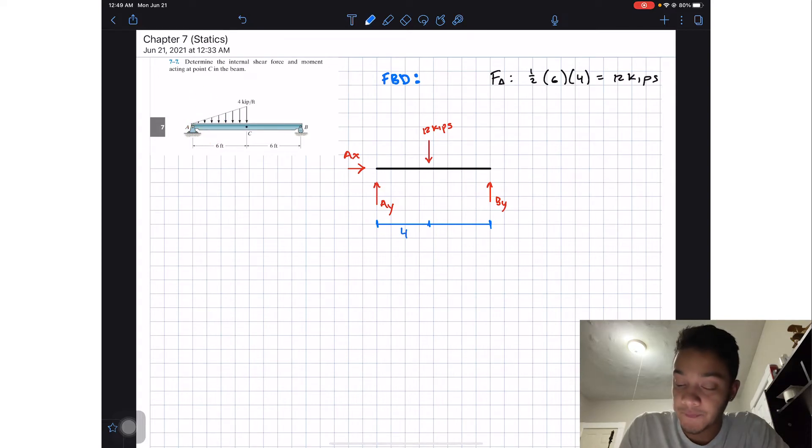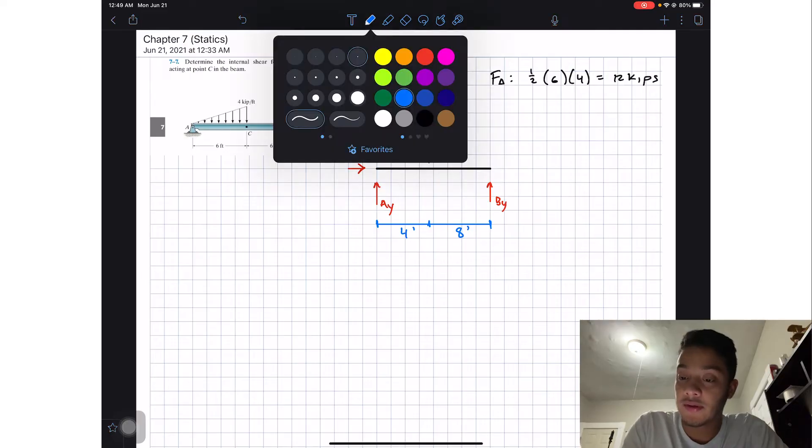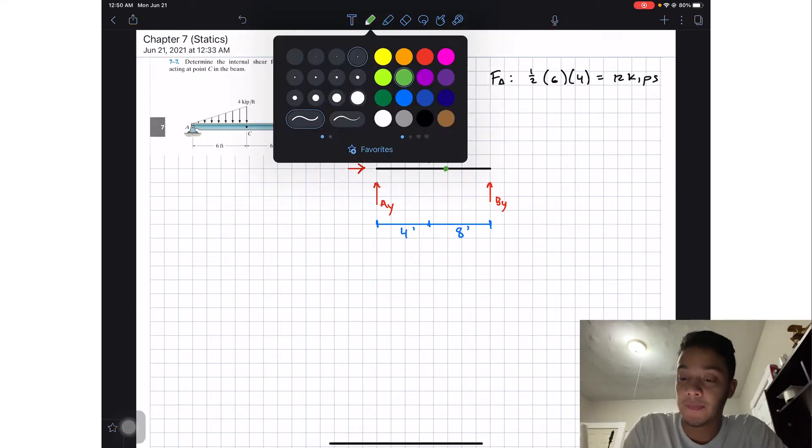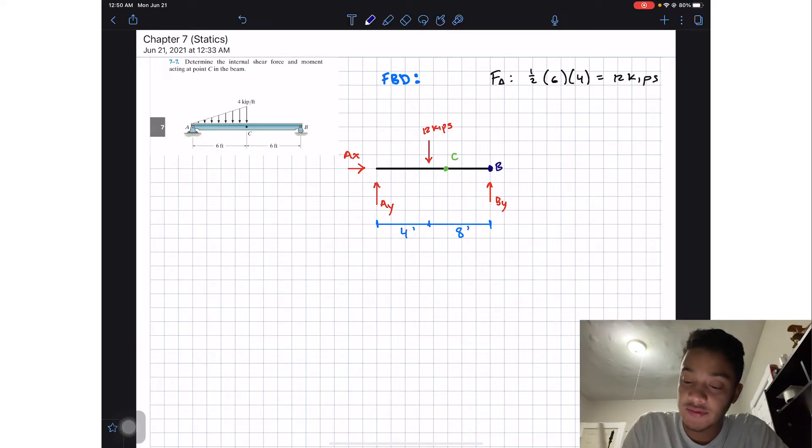So we got 4, and then since the entire beam is 12, we got 8 feet in here. I'm gonna mark my point C in the middle which will be around here, and this will be my point C, this is point B and point A.